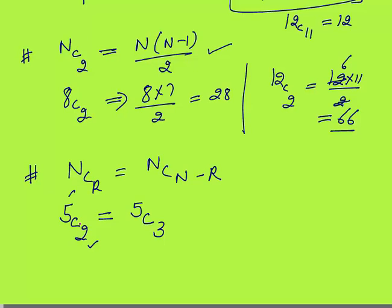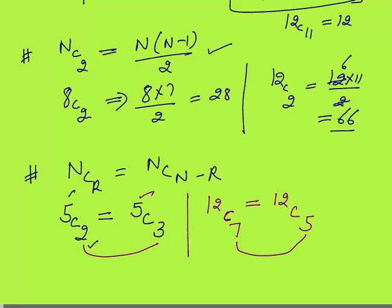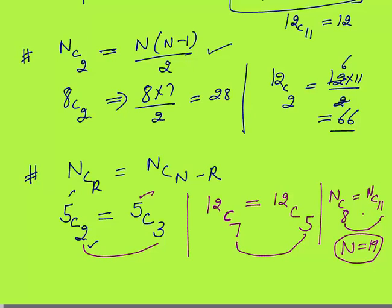A better way to understand this: the two R values always add up to N. For example, 12C7 equals 12C5, because 7 plus 5 equals 12. So if somebody says NC8 equals NC11, the value of N would simply be 8 plus 11, which is 19. When N is 19, then 19C8 will definitely equal 19C11.